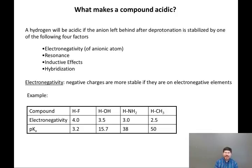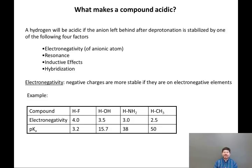Let's look at the hydrides of the first-row elements: HF, water (HOH), ammonia (HNH2), and methane (HCH3). HF has a pKa of 3.2 — still a weak acid, but the strongest on this chart, because fluorine has an electronegativity of 4.0. Water has a pKa of 15.7, because oxygen is the second most electronegative element at 3.5, so water is a weaker acid than HF.